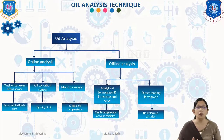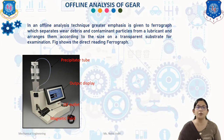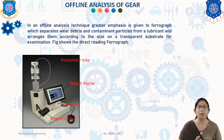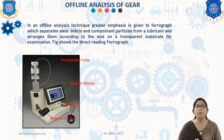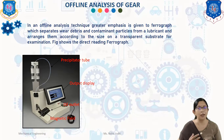In offline analysis, greater emphasis is given to ferrography, which separates wear debris and contaminant particles from a lubricant and arranges them according to size on a transparent substrate for examination. The particles can be examined using a standard optical microscope, where particle type, surface characteristics, and color can be studied. To observe root cause failure related to the gear, scanning electron microscope will be used. The figure shows the direct reading ferrograph.